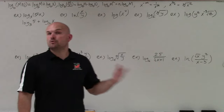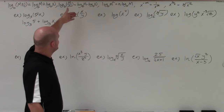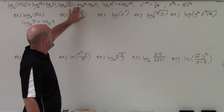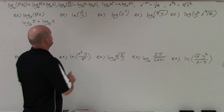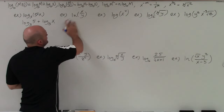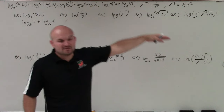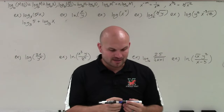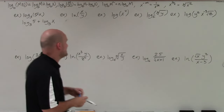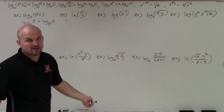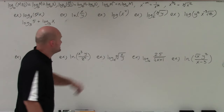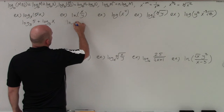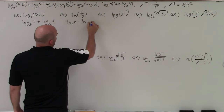The next example uses the quotient property. Since I am dividing x and y, just like dividing m and n, I rewrite that as subtraction. This works the same for natural logarithms as for a logarithm of any base. So this becomes ln of x minus ln of y.